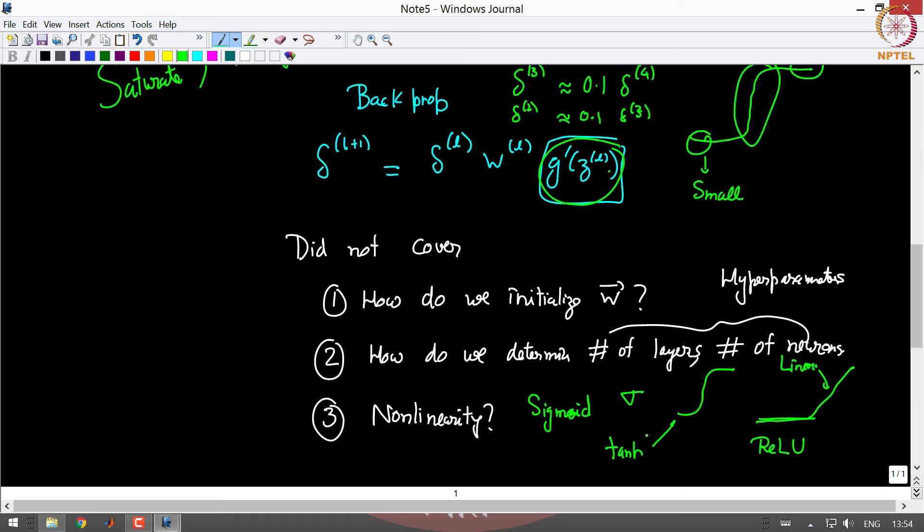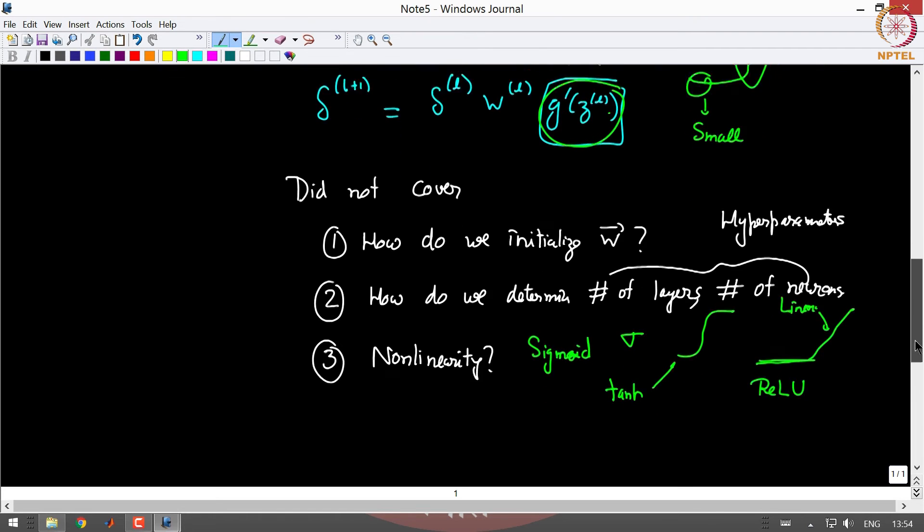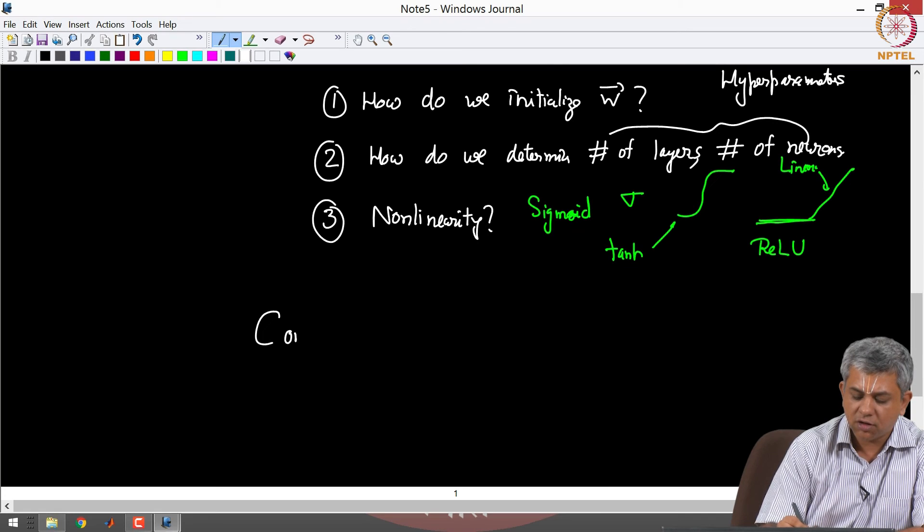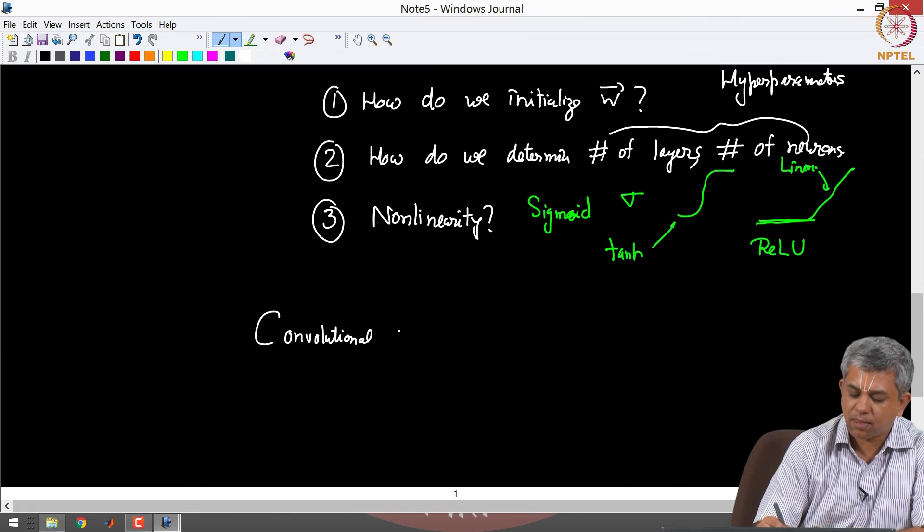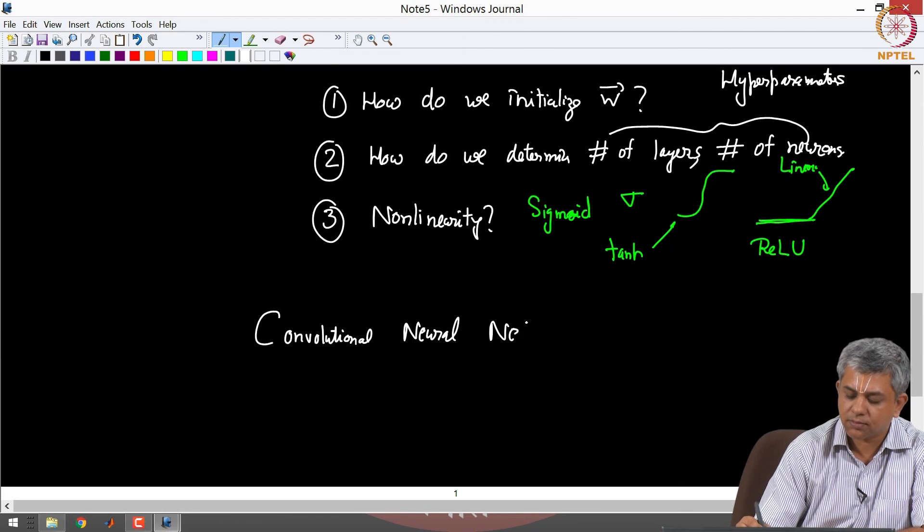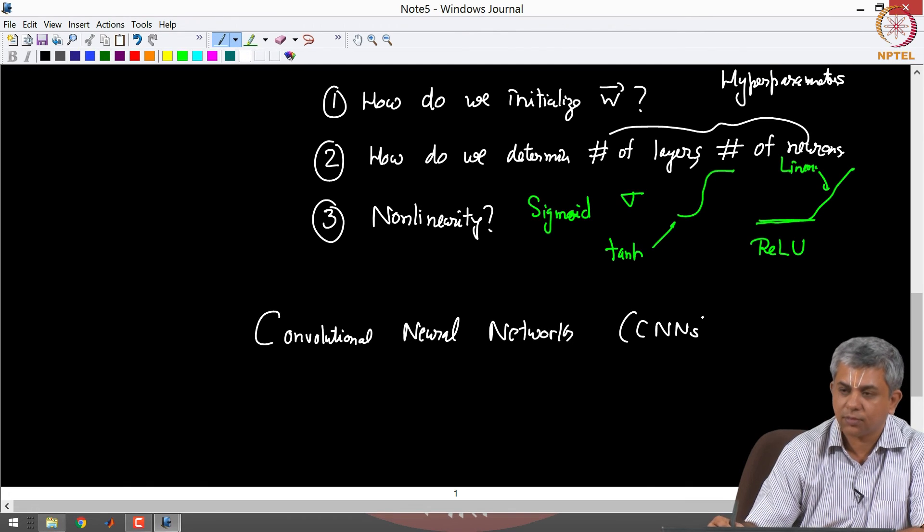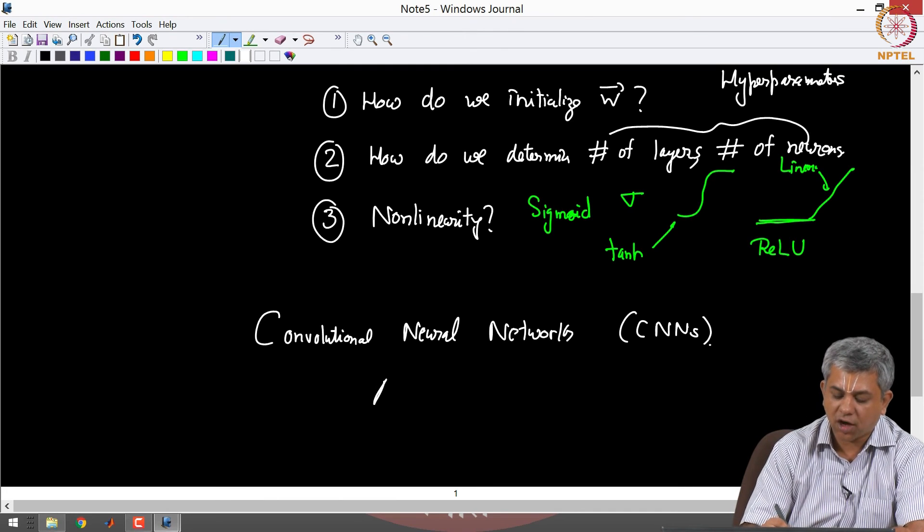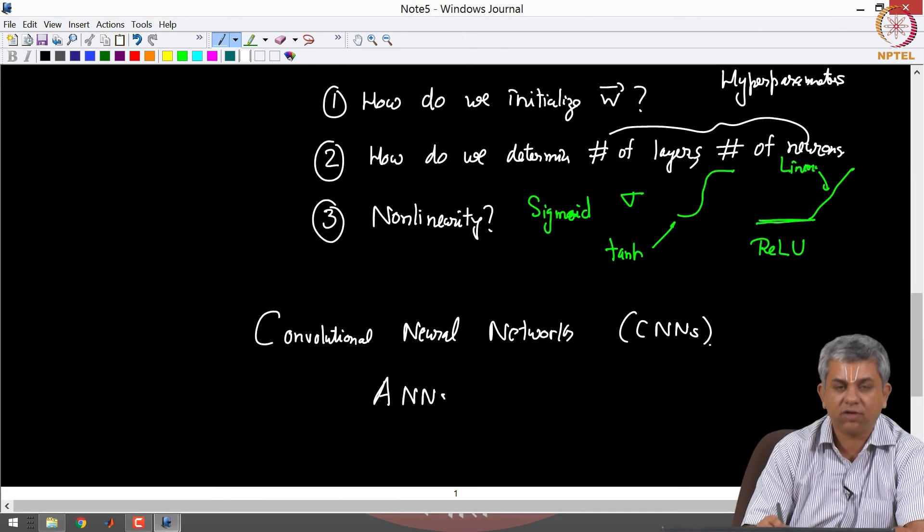These and other issues we will be seeing in the following weeks and a final heads up for next week, we will be moving to what is called convolutional neural networks, also called CNNs. They are a special case of ANNs or artificial neural networks or deep neural networks that we just saw for vision problems.